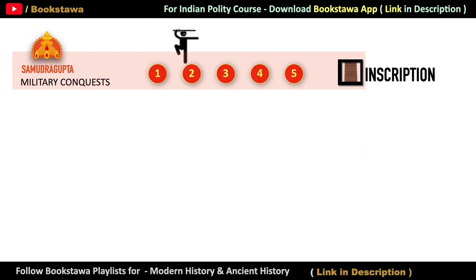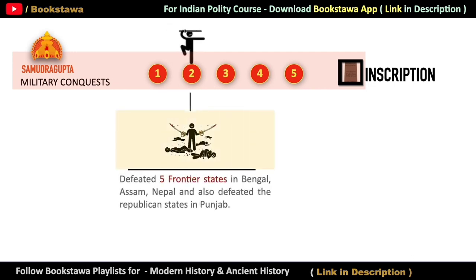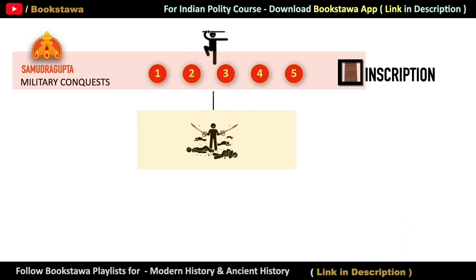In the second group, the rulers of five such frontier states have been placed, which used to belong to Bengal, Assam and Nepal, and also the republican states of Punjab. After defeating all these rulers, their regions were taken under control by Samudragupta.